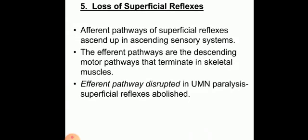The fourth point is loss of superficial reflexes. Superficial reflexes are basically long polysynaptic reflexes that involve different parts of the central nervous system — very different from stretch reflexes, which are monosynaptic and integrated at the level of the spinal cord. The efferent pathways of these superficial reflexes are present in the descending motor pathways that terminate on skeletal muscle. When the efferent pathways get disrupted in UMN lesions, all the superficial reflexes get abolished.